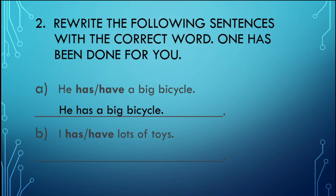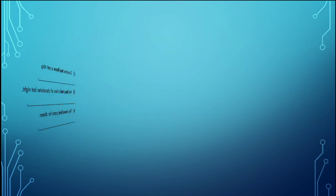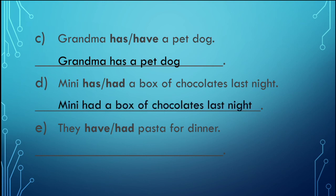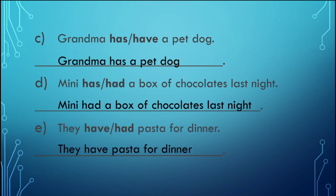B: 'I have lots of choices.' C: 'Grandma has a pet dog.' Grandma is singular, so we use 'has.' D: 'Minnie had a box of chocolates last night.' Since 'last night' indicates the past, we use 'had.' E: 'They have pasta for dinner.' Since 'they' is plural and it is present, we use 'have.'